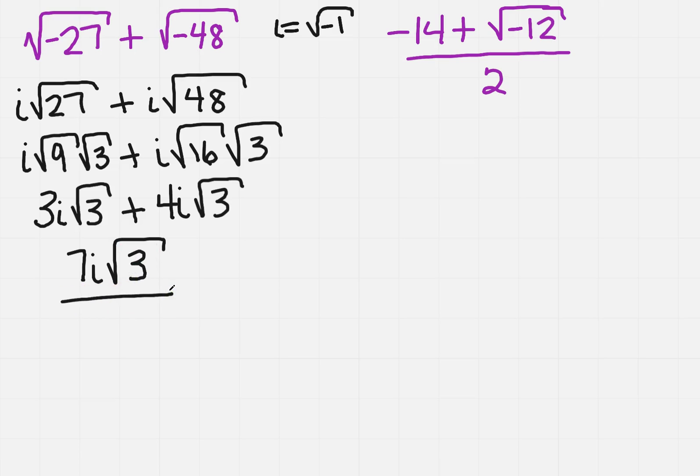Now, what about over here on the right? It looks a little scarier, but it's really not as bad as it appears. Again, I've got that minus sign under the radical, so the first thing I need to do is take an i out. And when I do that, I'm left with the square root of 12.